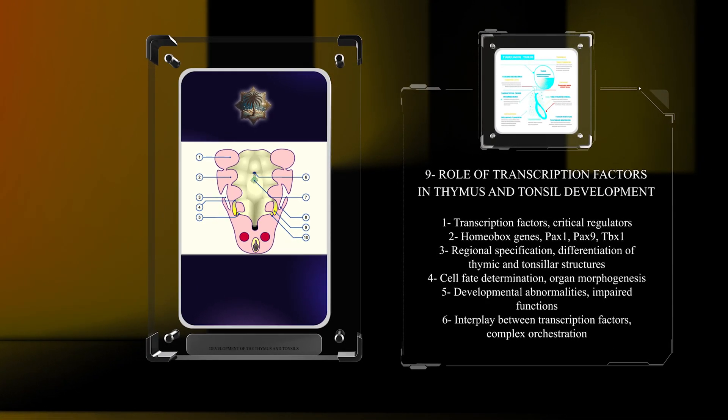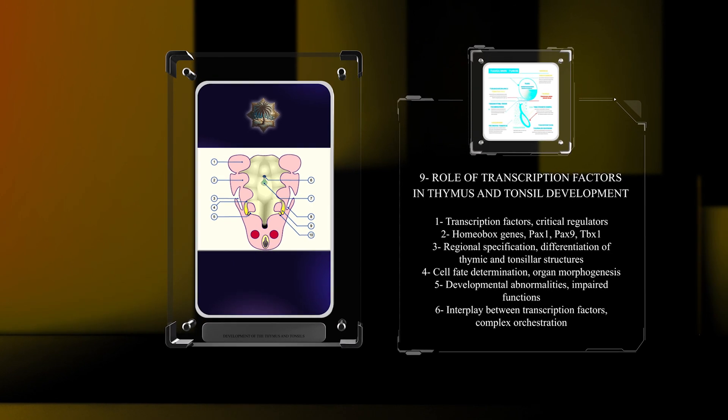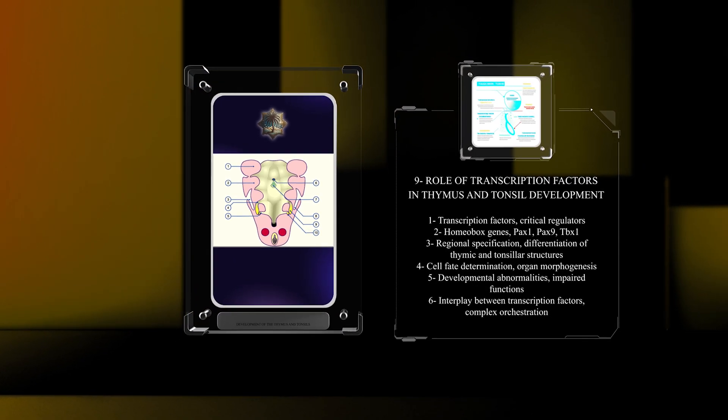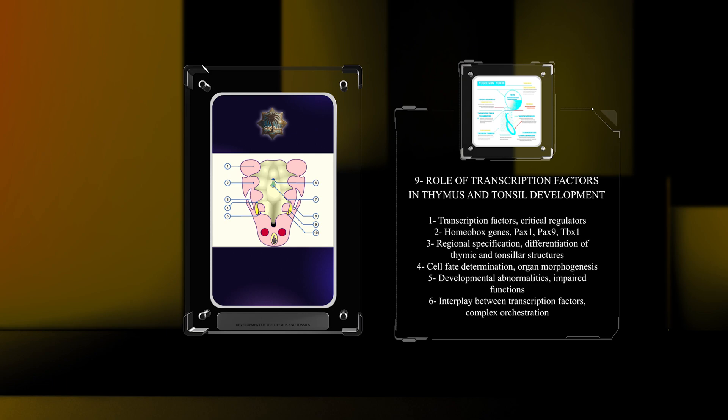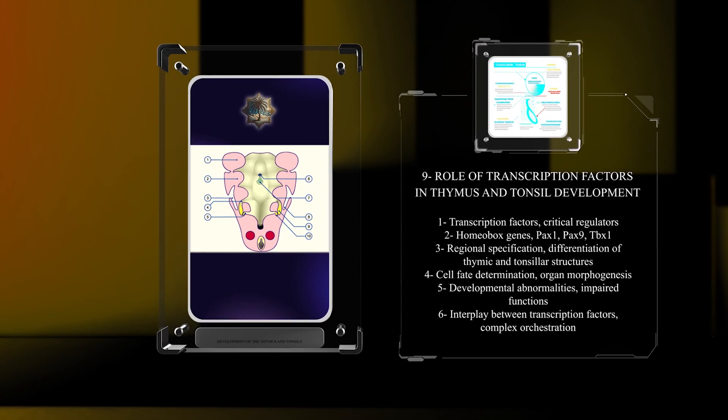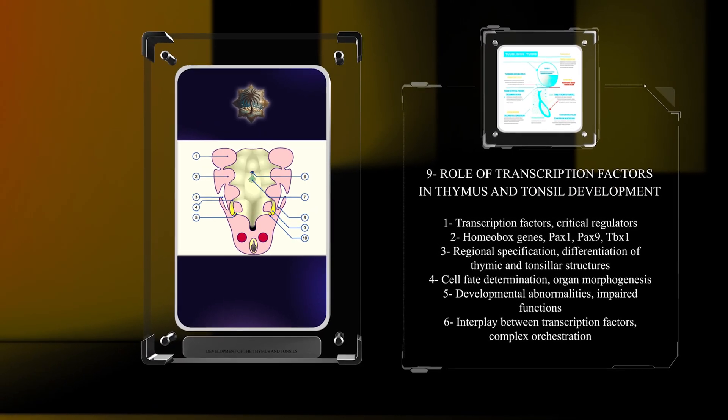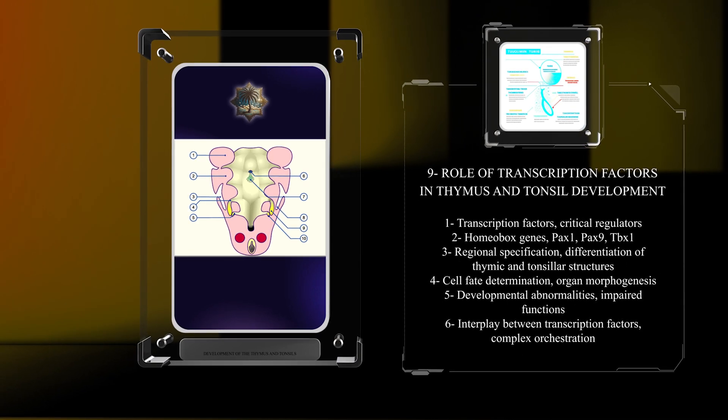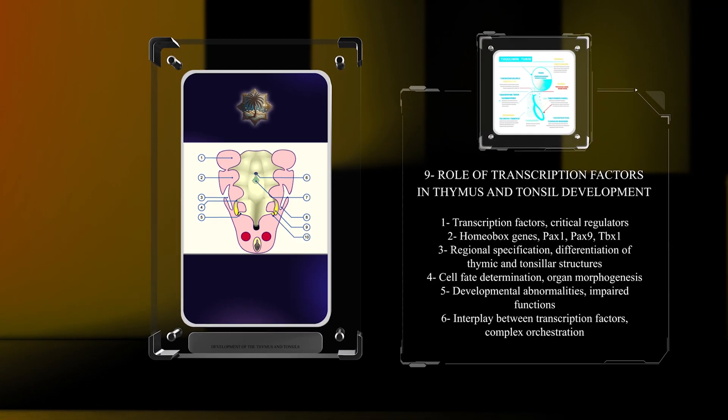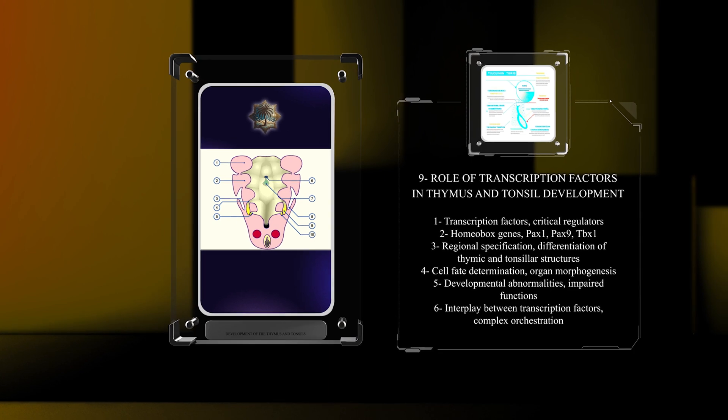These transcription factors provide the necessary cues for proper cell fate determination and organ morphogenesis. Perturbations in their expression can lead to developmental abnormalities and impair the functions of thymus and tonsils. Understanding the intricate interplay between transcription factors is crucial for comprehending the complex orchestration of thymus and tonsil development.